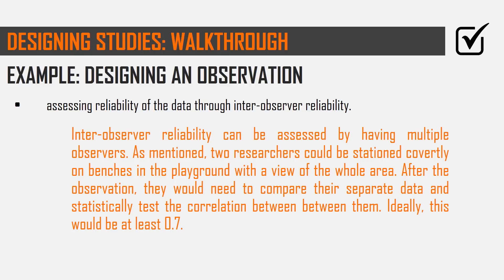Once they've done the observation and collected their data through event sampling, they need to compare their own separate observations. Then you're going to statistically test the correlation between them. For checking inter-observer reliability, you're looking for a strong positive correlation between the two observers. If there isn't one, possibly they've missed information or it was too subjective, so you'd need to go back to the drawing board on your behavioral categories. You're looking for a correlation coefficient of at least 0.7 to 0.8 to indicate enough agreement.